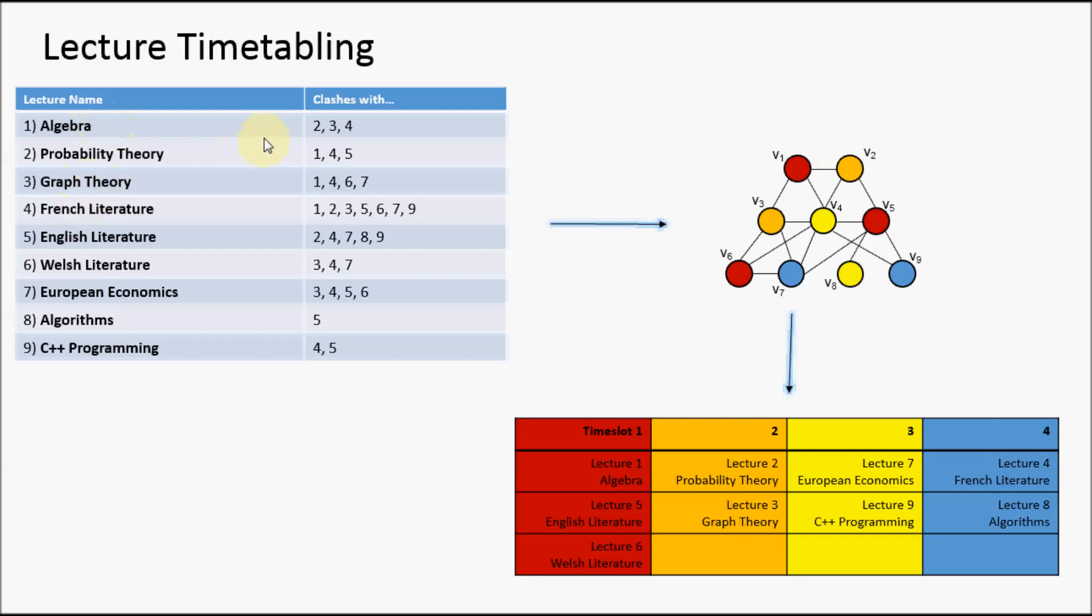Some of these lectures clash with one another. For example, algebra cannot be timetabled at the same time as probability theory, perhaps because there's some student that wishes to take them both.